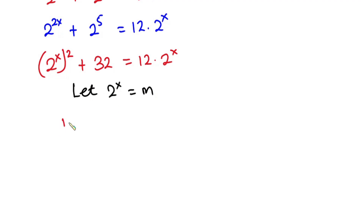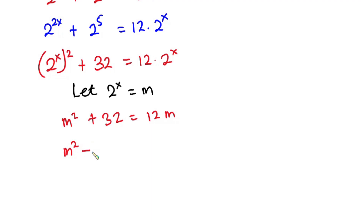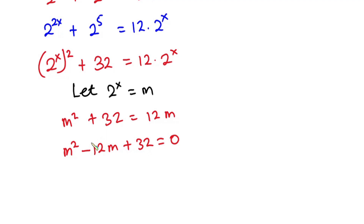Setting 2 to the power x equal to m, we have m squared plus 32 is equal to 12m. Let's equate everything to zero, so we have m squared minus 12m plus 32 is equal to zero. As you can see we have a quadratic equation, so let's use the factoring method to solve this.